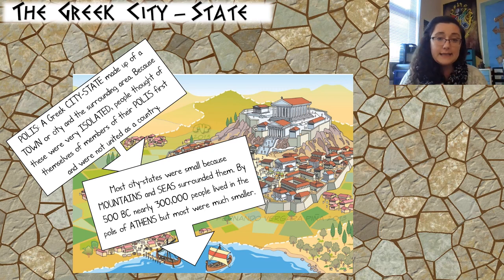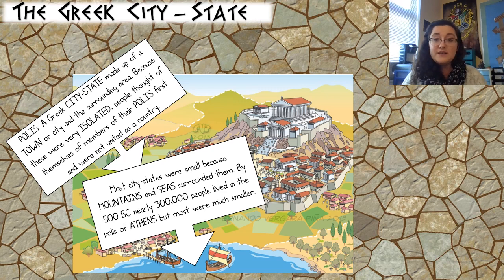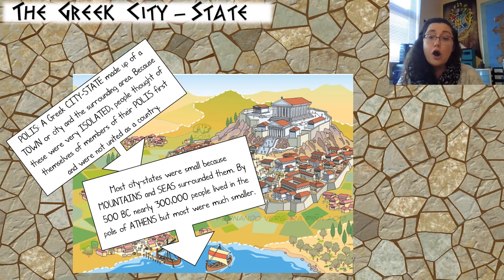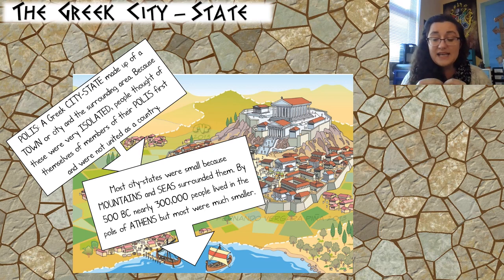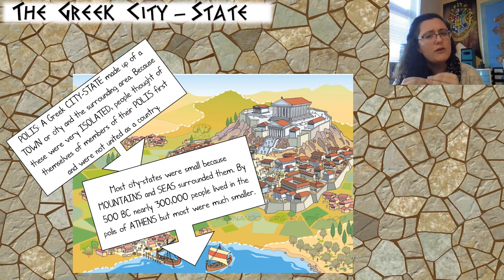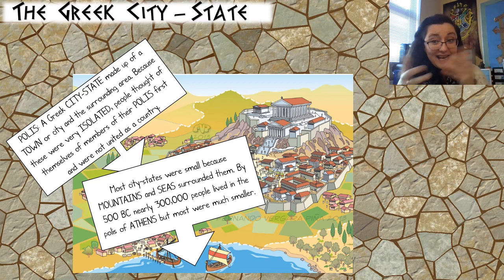Most city-states were small because they were isolated by mountains and seas. By about 500 BC, nearly 300,000 people lived in the polis of Athens, but most were much smaller — smaller than Jacksonville, maybe even smaller than modern-day St. Augustine. Many were about the size of our local community. Just like in a small town, you kind of know everybody, get close with your community, and everybody's in everybody's business because you're all together.